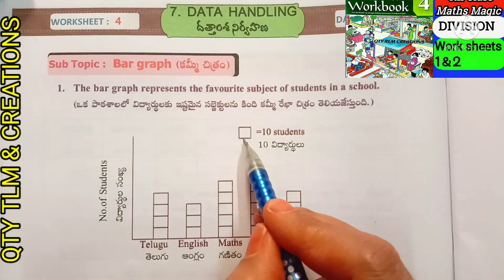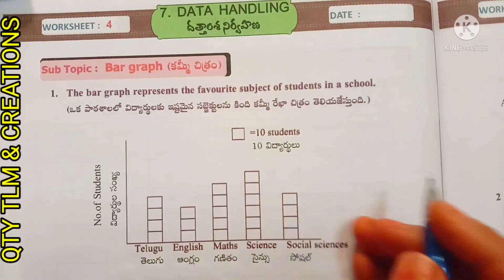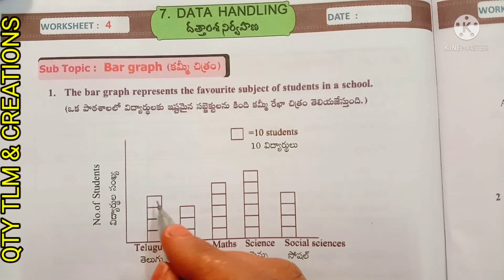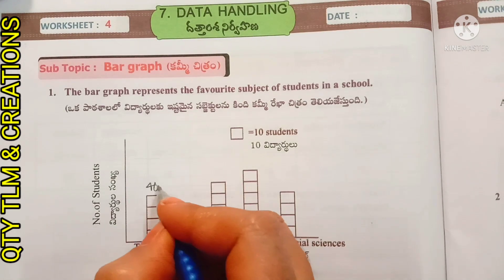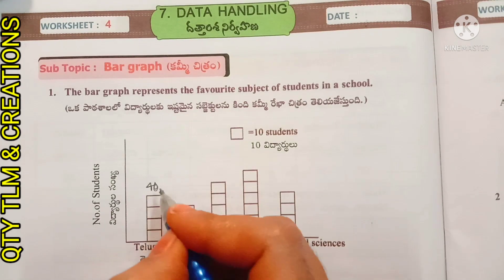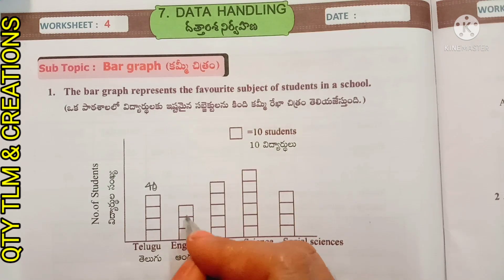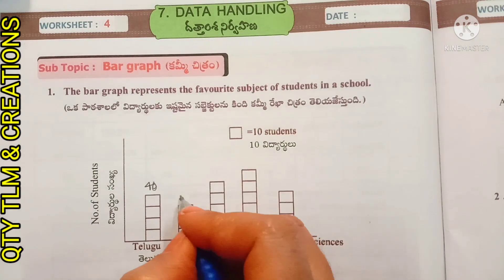One box represents ten students. For Telugu: there are four boxes, so four tens equal forty students. Forty students like Telugu. For English: there are three boxes, so three tens equal thirty students. Thirty students like English.